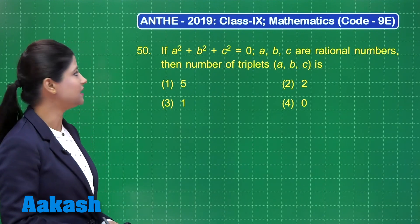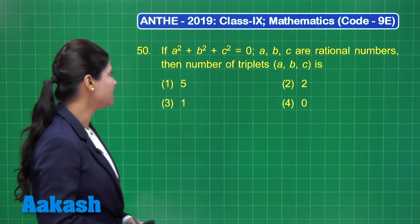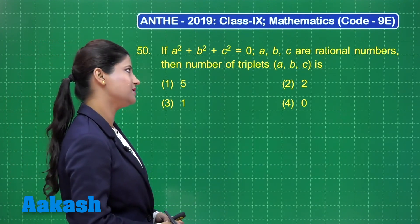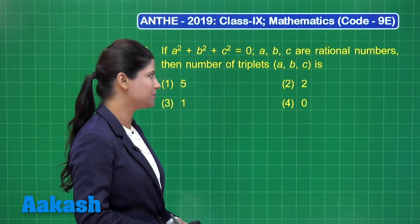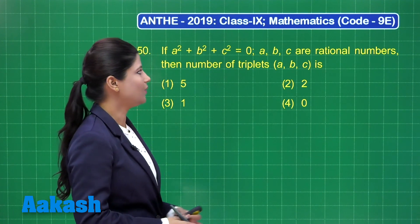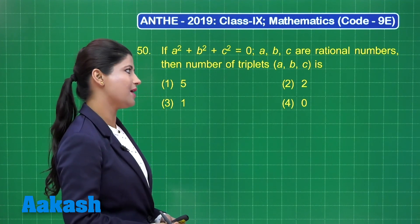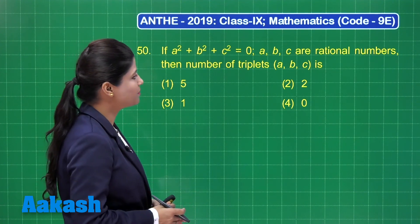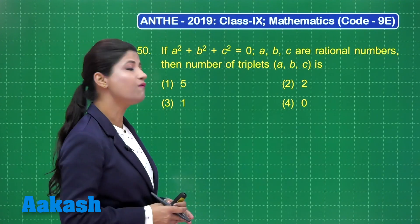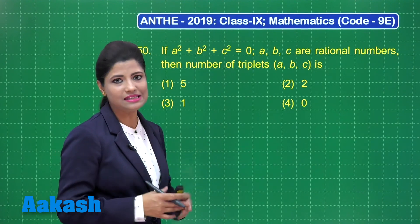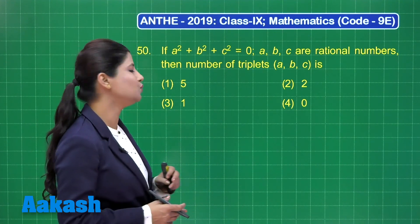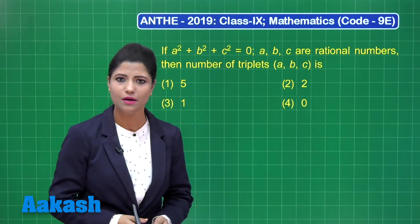Let us take up question number 50. It states that if a squared plus b squared plus c squared is equal to 0, where a, b, c are rational numbers, the number of triplets of a, b, c is — out of these four options: 5, 2, 1, and 0.